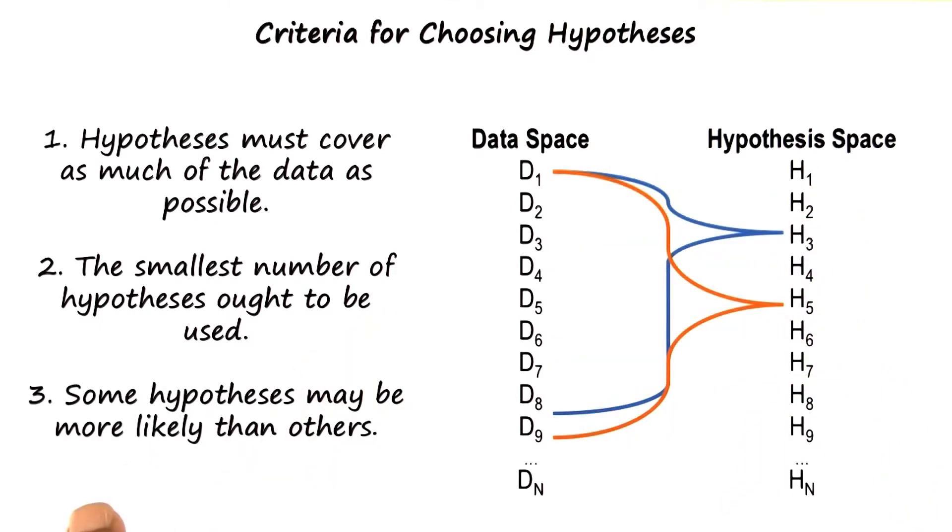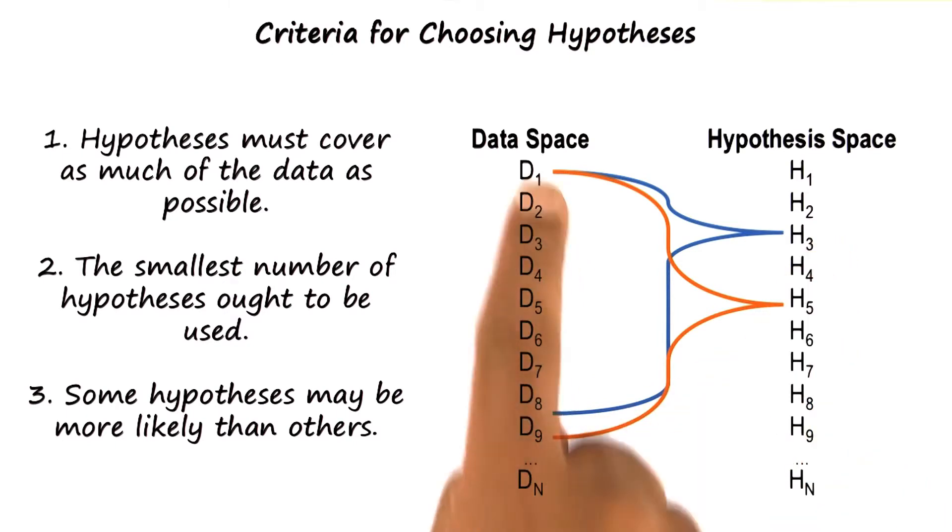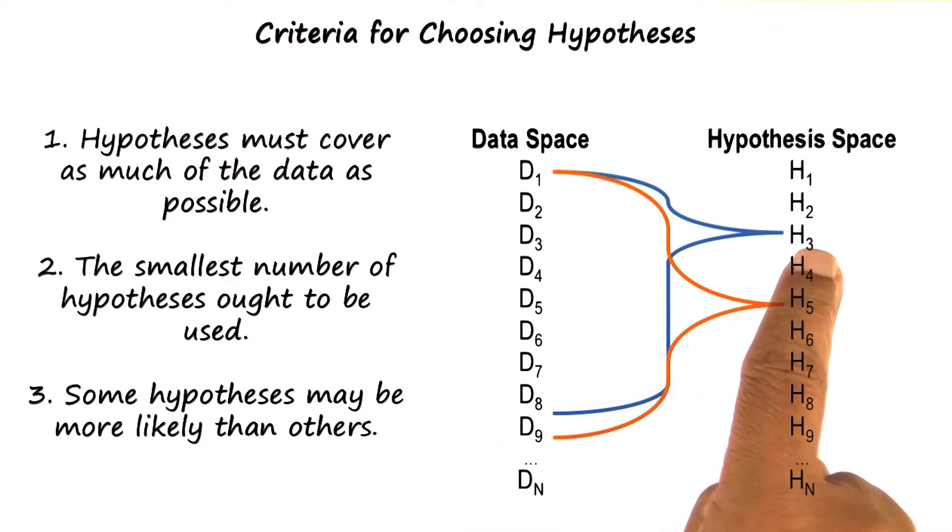The third criteria for choosing between competing hypotheses is that we want to pick those hypotheses in which we have more confidence. Some hypotheses are more likely than others. We may have more confidence in some hypotheses than in others. As an example, in this particular scenario, H3 may explain data items D1 to D8, and H5 may explain more data elements from D1 to D9. So H5 also explains D9 that H3 doesn't. However, we may have more confidence in H3, and so we may pick H3 instead of H5.